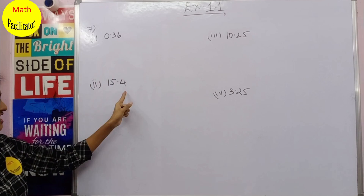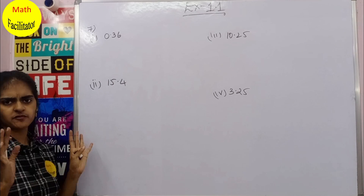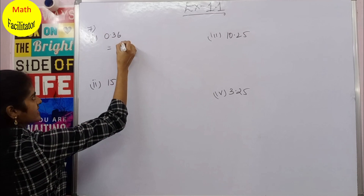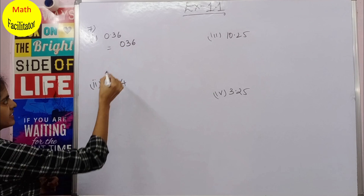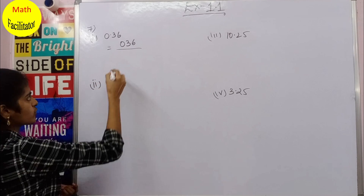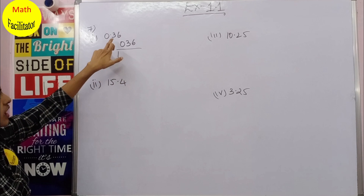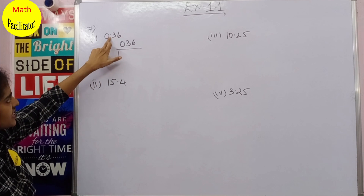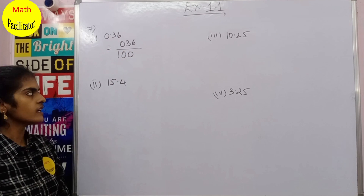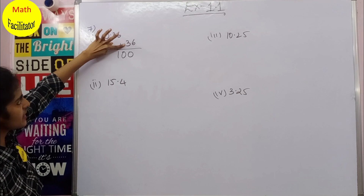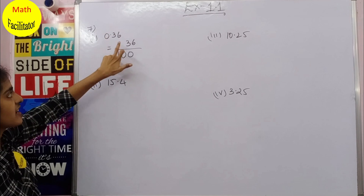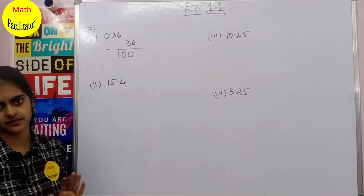Now you have to express these decimals in rational form — that is, P/Q form. For 0.36: write the number without the decimal as 36, then divide by 1 followed by as many zeros as there are decimal places. After the decimal point there are 2 places, so divide by 100. The leading zero is meaningless, so directly write 36/100.